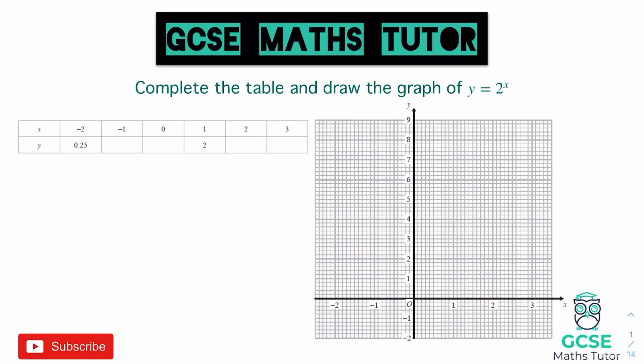The first question we're going to look at says: complete the table and draw the graph of y equals 2 to the power of x. When we have something to the power of x, that's what defines our exponential graph. This falls in very nicely with coordinate geometry. Sometimes we're given a table, sometimes not — with exponential graphs you're a little bit more likely to have a table than with a straight line graph.